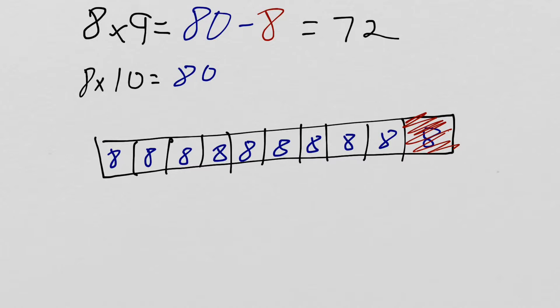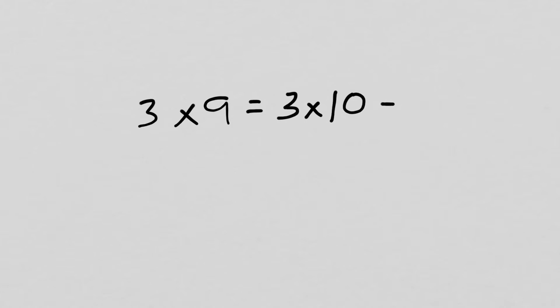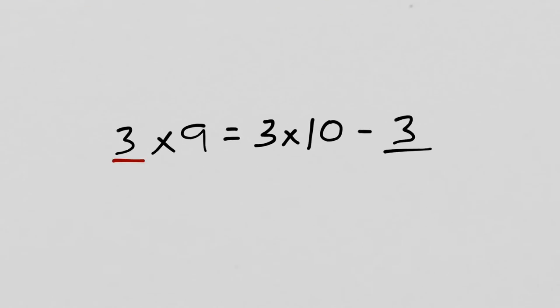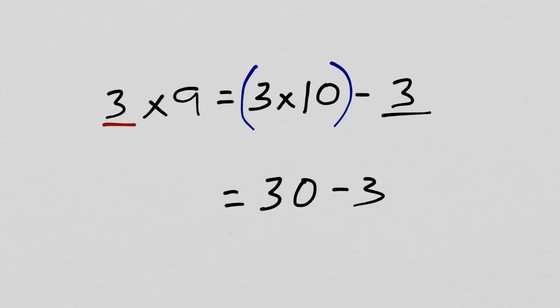This strategy can be used with any 9s fact, so let's try another one. Let's do 3 times 9. The strategy I just learned tells me that is going to be the same as 3 times 10 minus — what do you think? It's going to be minus 3, because I'm taking away one group of 3. It's the same as up here where I had the 8s and took away one group of 8. I'm going to put parentheses around 3 times 10 just to help remember I'm doing that first. 3 times 10 equals 30, so this is now 30 minus 3. That's a pretty easy one — count back or just subtract it mentally. 27.